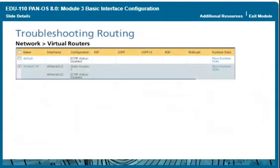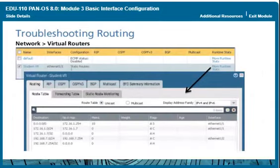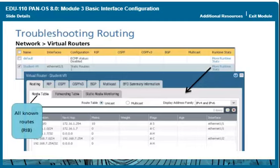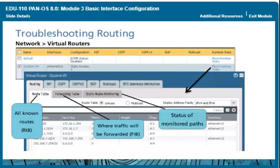Click the More Runtime Stats link to display detailed information about a virtual router's current routing state. The routing tab contains three tabs: the Route Table tab displaying the RIB with all currently known routes, the Forwarding Table tab displaying the FIB derived from the RIB with the firewall interfaces and IP addresses used to forward traffic, and the Static Route Monitoring tab displaying the status of monitor paths used to detect static route failures.